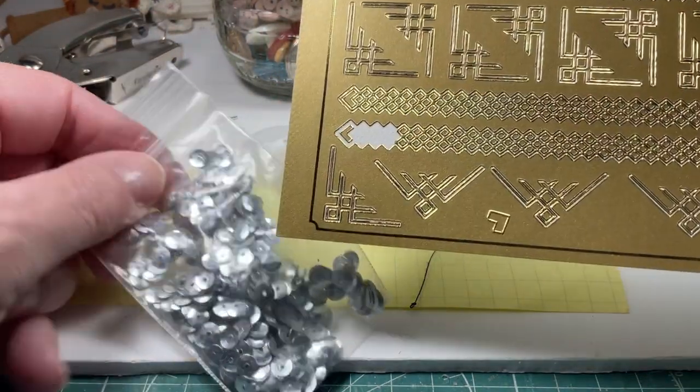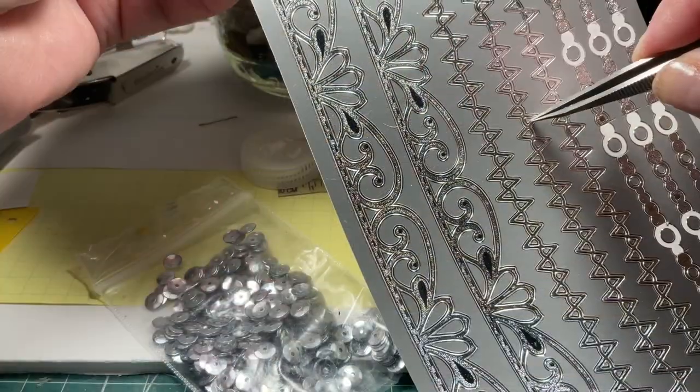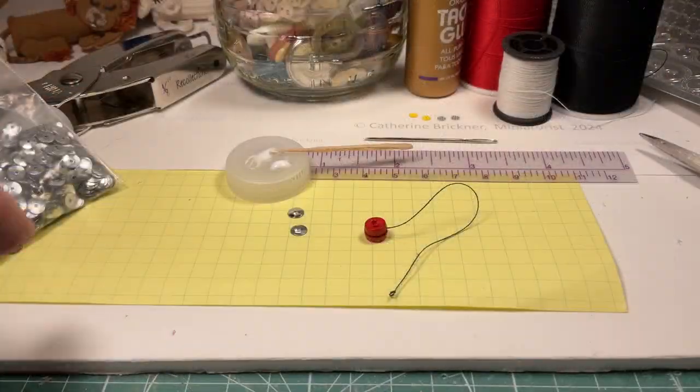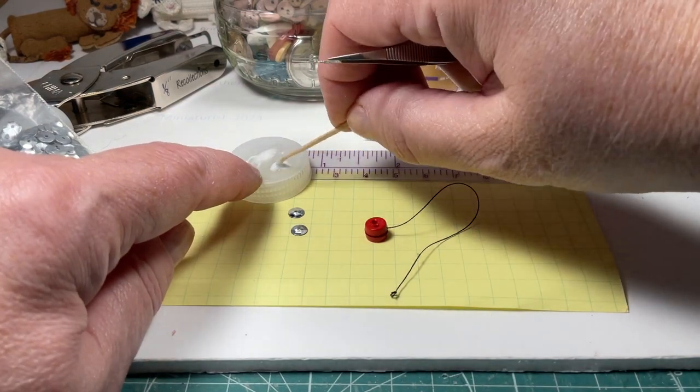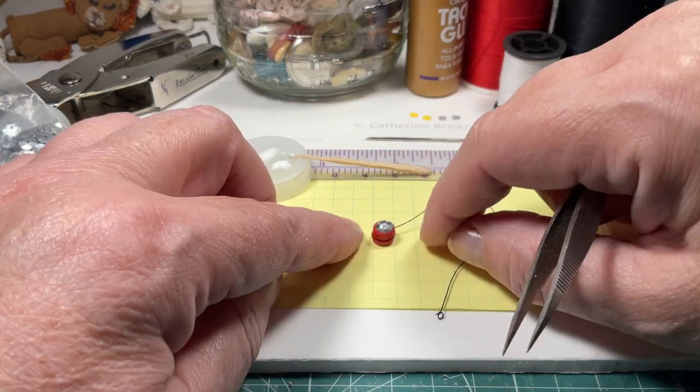You can decorate the sides by gluing sequins, tiny stickers, paper designs, or with markers. Seal with glue or mod podge.